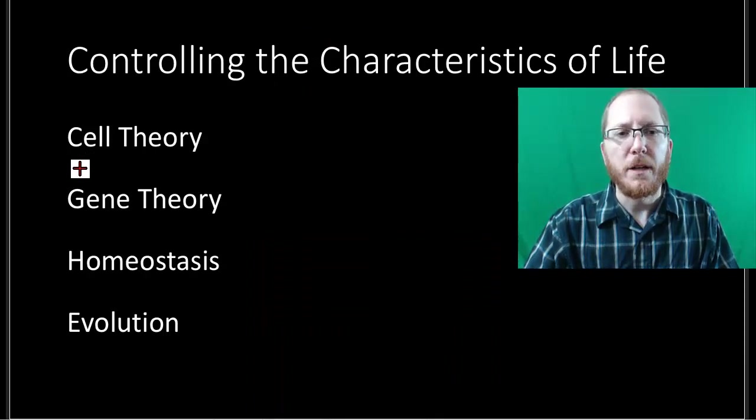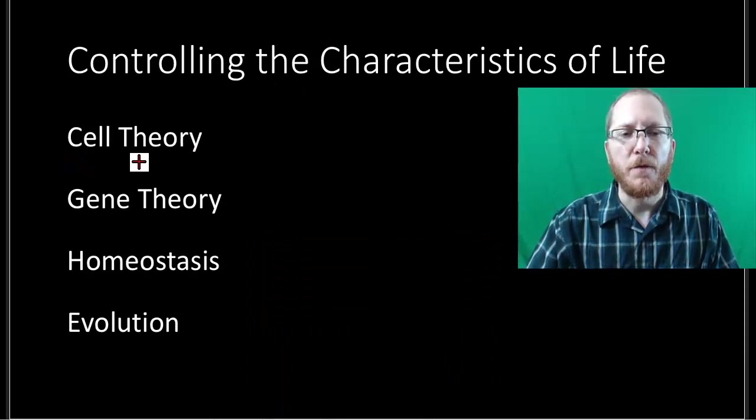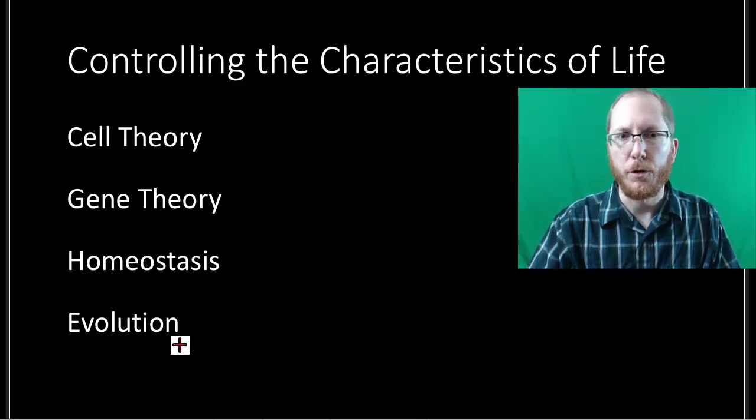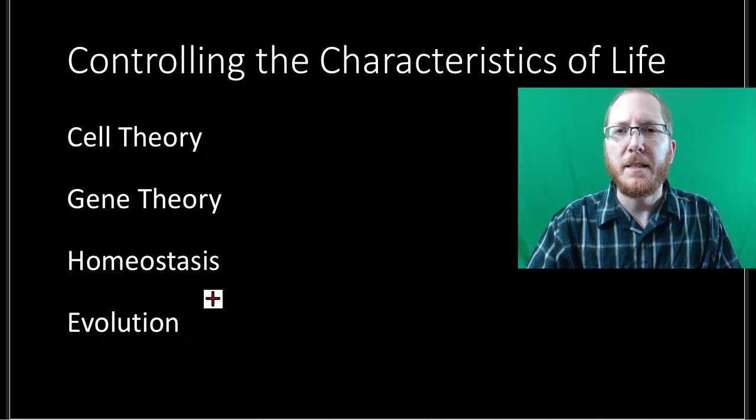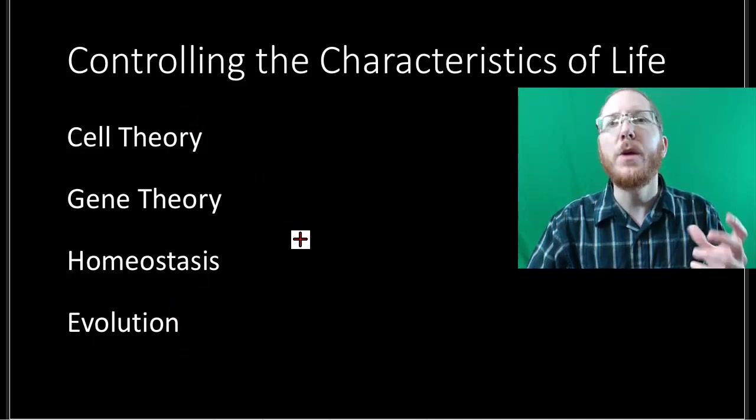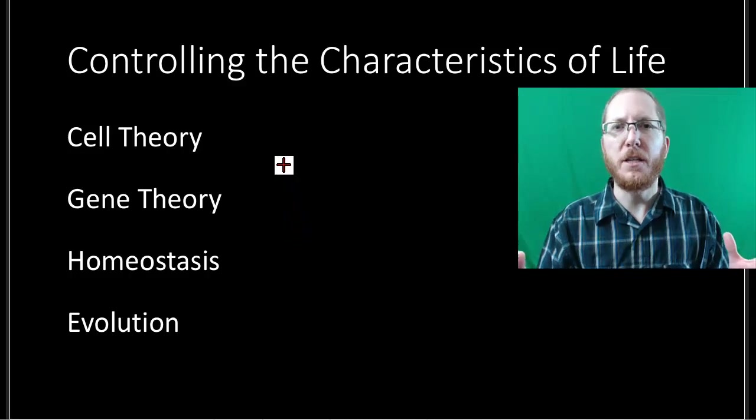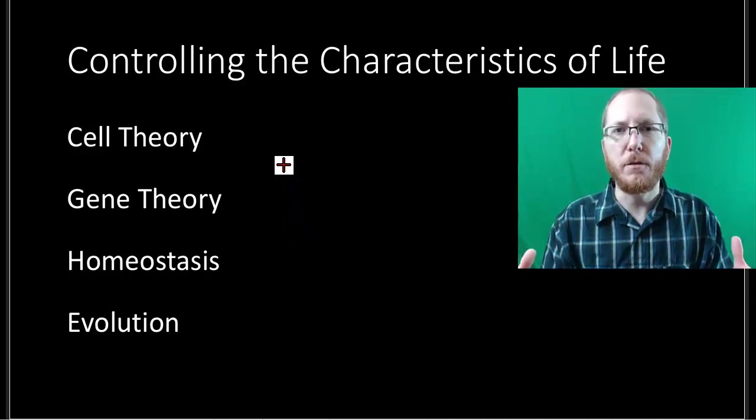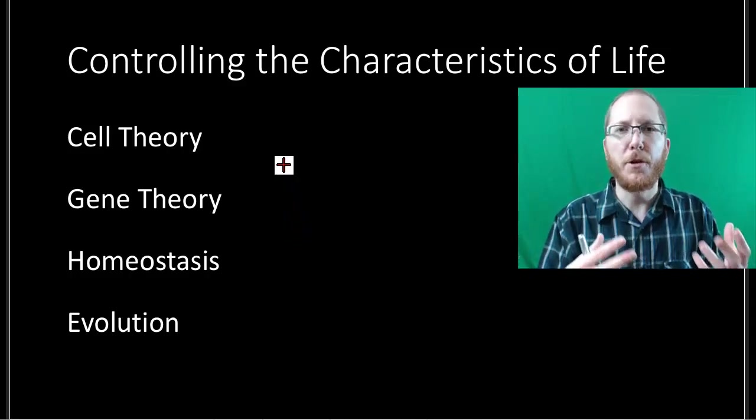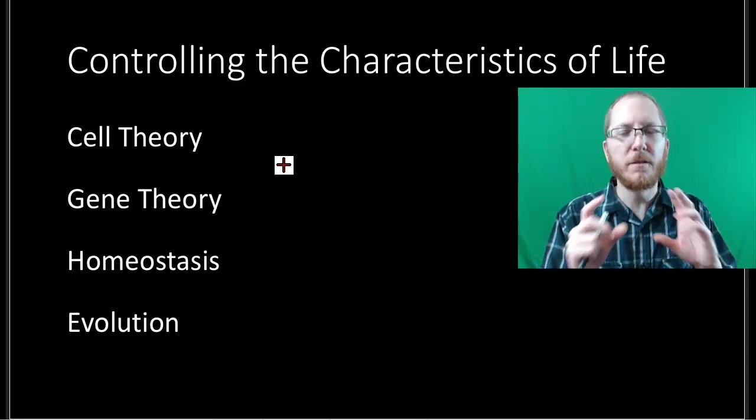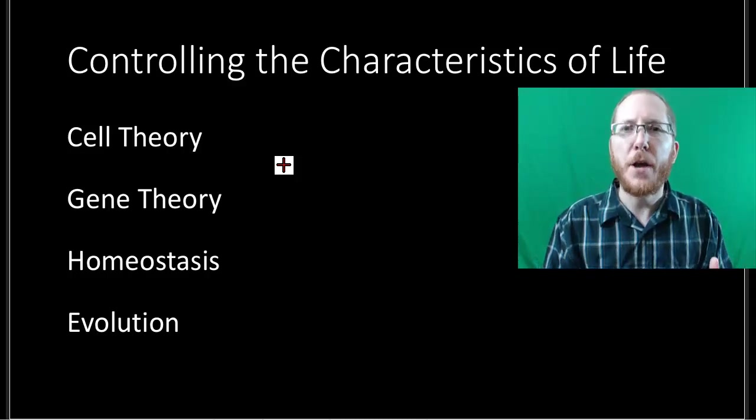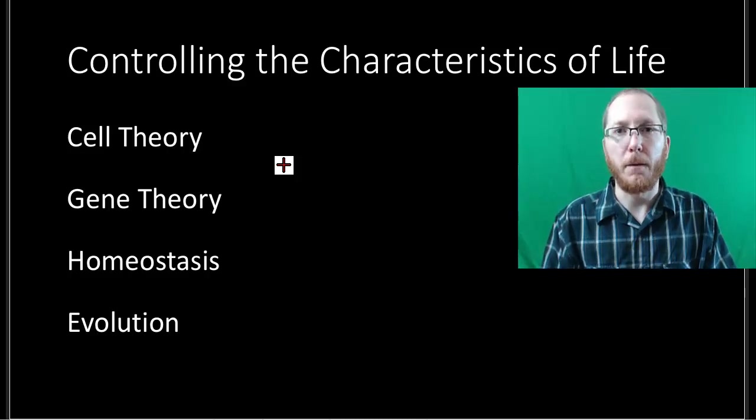The four controlling ideas are going to be cell theory, and we've discussed that one before, gene theory, homeostasis, and evolution. When you blend all these guys together, it lets you understand how we have the diversity of life that we have now, which means that within a species you can see that there's all this variation. There's no two people that are alike, even identical twins have some minor differences. But in general, like in our classroom, you look around and there's diversity.